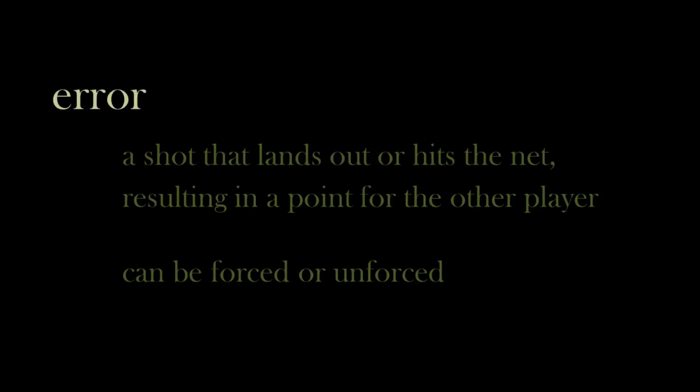One thing you might see referenced during a match is the number of errors each player has. An error is a shot that either lands out of bounds or hits the net, thus losing a point for that player. This is broken down into forced and unforced errors, which are a bit subjective. A forced error is an error that was a difficult shot — say a well-placed drop shot on their side that they're unable to hit back over or inbounds. An unforced error is a shot that the player probably should have been able to return.